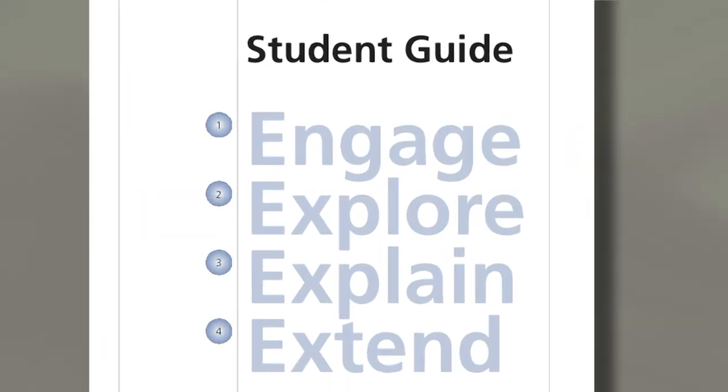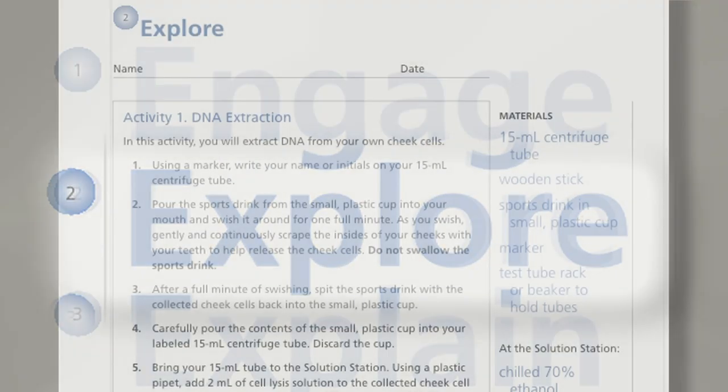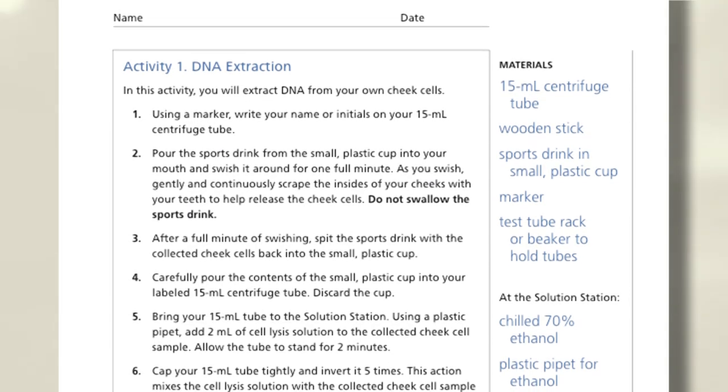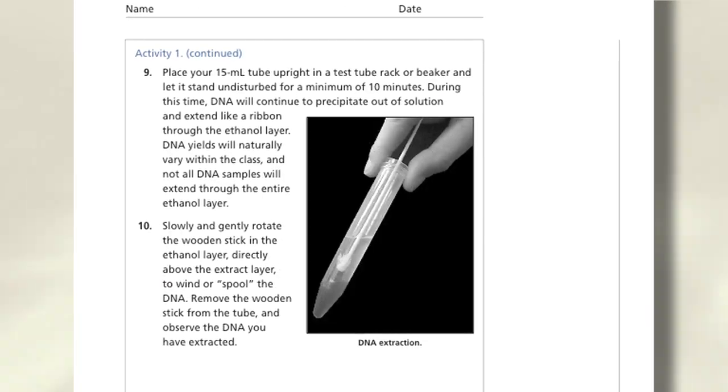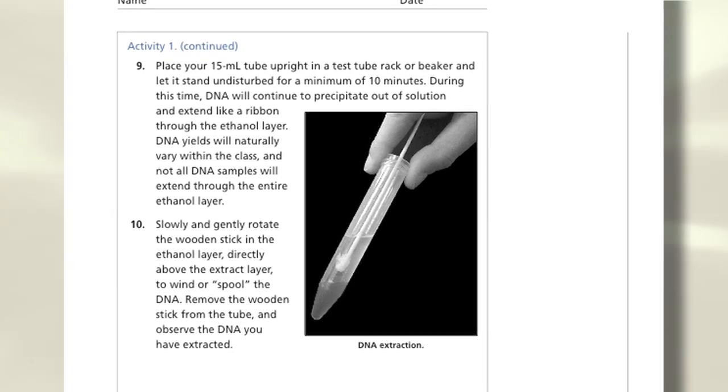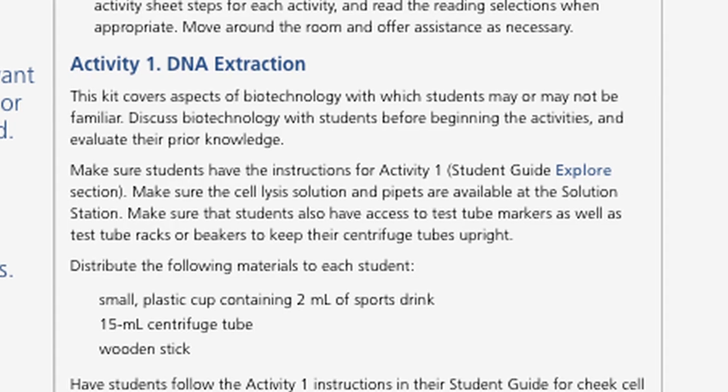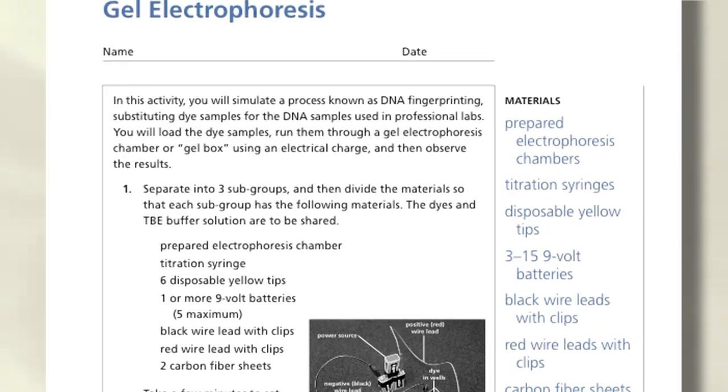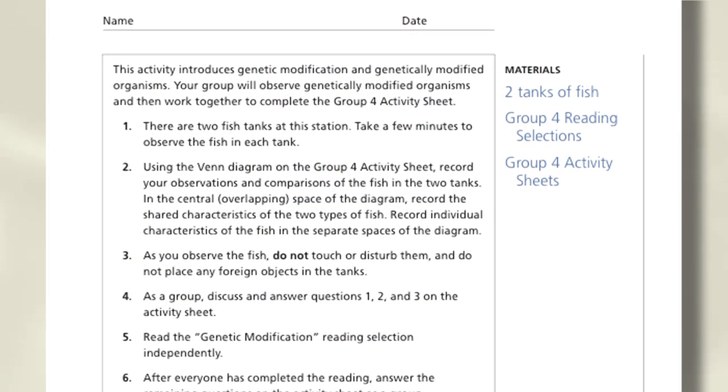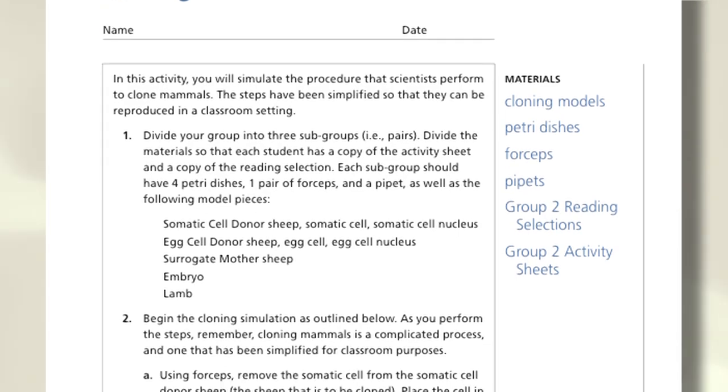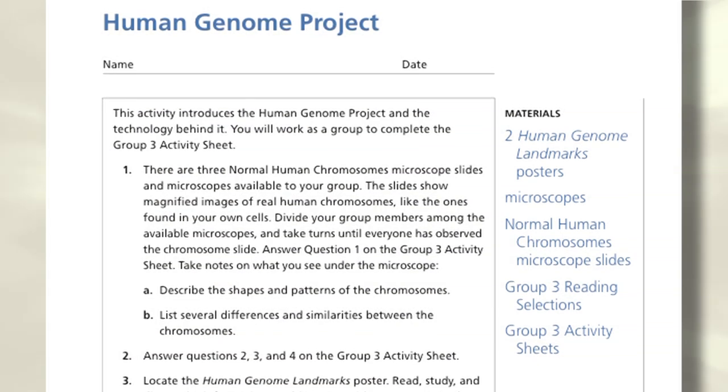Students progress to the Explore section where they'll be guided through an investigation. Through a series of activities, students gain an understanding of the concepts being covered in the kit. In the Introducing Biotechnology Kit, students will conduct several activities about extracting DNA, running gel electrophoresis, genetically modified animals, cloning, stem cells, and the Human Genome Project.